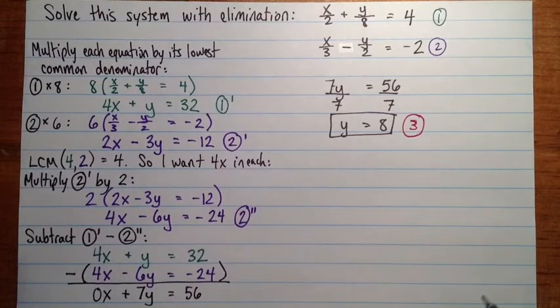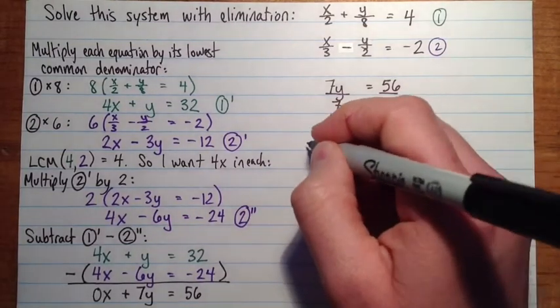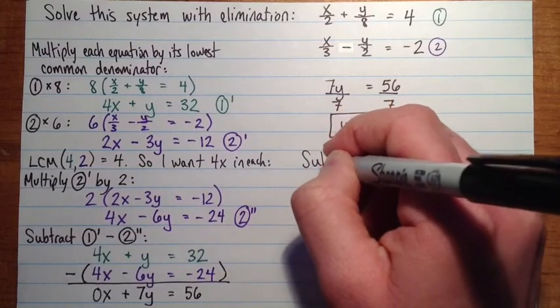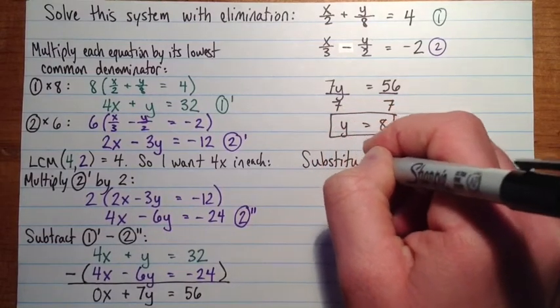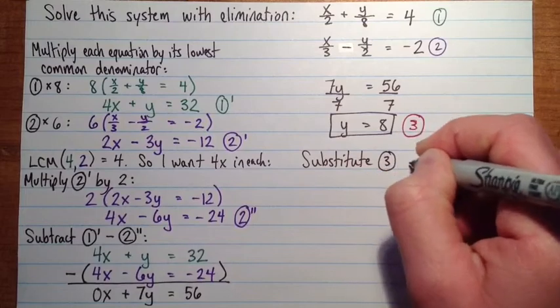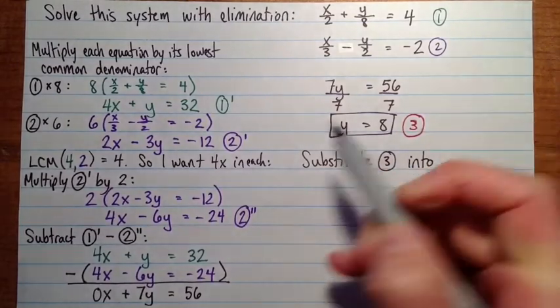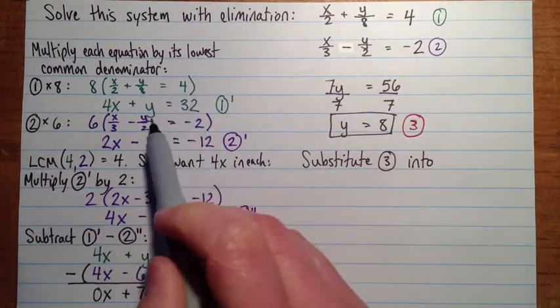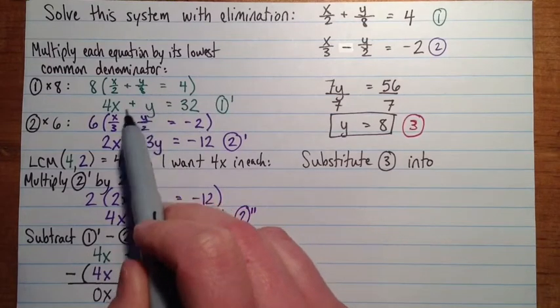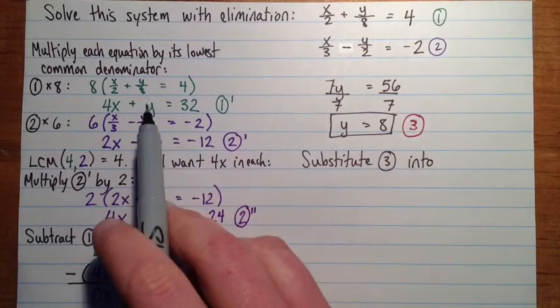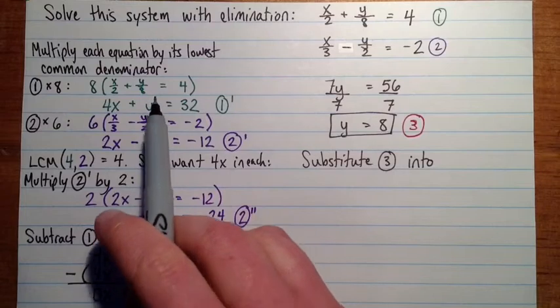Or if we want to avoid those fractions, we can substitute into 1 prime or 2 prime. I guess any of those is fine. So maybe we'll substitute 3 into... I'll choose either one of these ones. Maybe I'll just choose 1 prime, just because it's only one y. Either one should give you the same answer. If we haven't made any mistakes yet, you'll get the same answer from both.